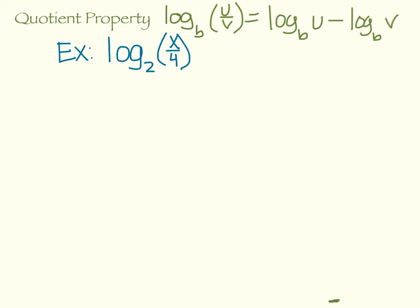Our next property is the quotient property, and that says log base B of U over V, something divided by something, is equal to log base B of U minus log base B of V. So look at the exponential rules: division turns into subtraction. For an example, log base 2 of x over 4 becomes log base 2 of x minus log base 2 of 4.